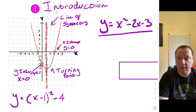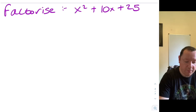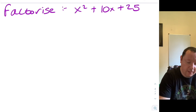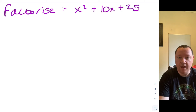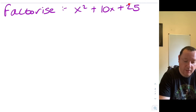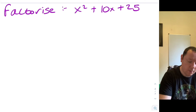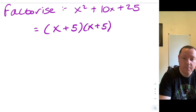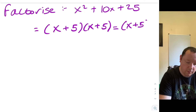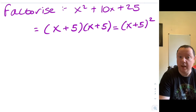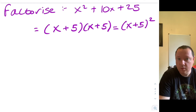Let's move on to actually how we go from y equals x squared minus two x minus three to y equals x minus one squared minus four. So we'll start by looking at an example. If we had a question that says factorize x squared plus 10x plus 25, we would know we're looking for two numbers that times together to make 25 but add together to make 10. We would get x plus 5 times x plus 5, the same bracket twice, so it's x plus 5 squared — that is a perfect square.